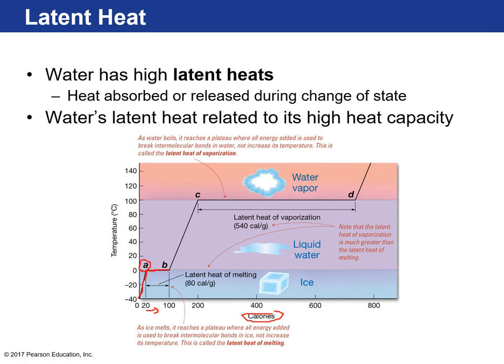All the energy added during the ice-to-water phase change is used to break up the intermolecular bonds in ice — it does not increase temperature. This is called the latent heat of melting, which is approximately 80 calories per gram.